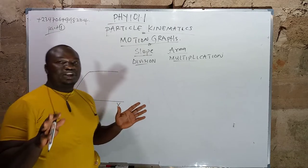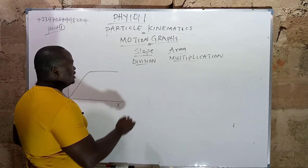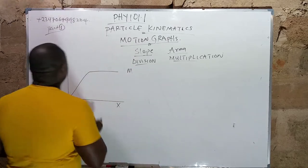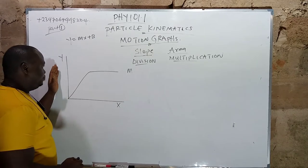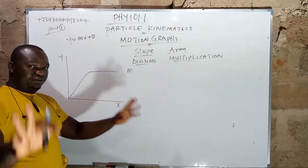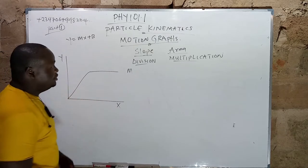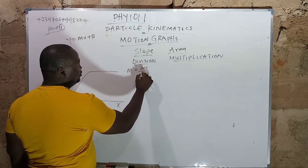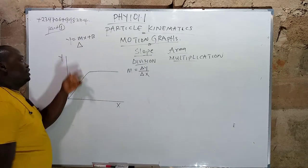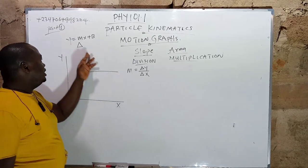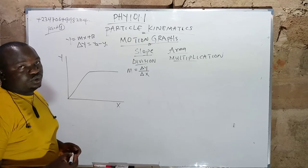From coordinate geometry, if you are good in mathematics, you know that slope is represented as m from the equation y = mx + b, where m is the slope. Since slope involves division, to get the slope you need changing y over changing x. Whenever you see the delta symbol, it means change — for example, change in y means y2 minus y1, and change in x means x2 minus x1.